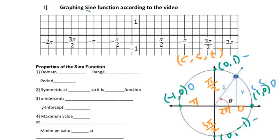We want to graph the sine function, so basically just look at the second coordinate and then the angle. When angle equals 0, the second coordinate is 0, so you find the point (0, 0) over here. Then when angle is pi over 2, the second coordinate is 1, so you find pi over 2, 1 over here.